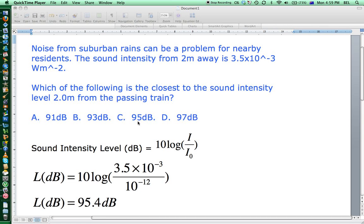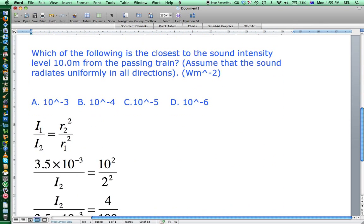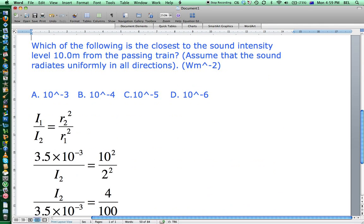The second question now assumes that the sound radiates uniformly in all directions, so we have to use the inverse square law here. The best form of that to use is this: intensity 1 over intensity 2 equals radius 2 squared over radius 1 squared.